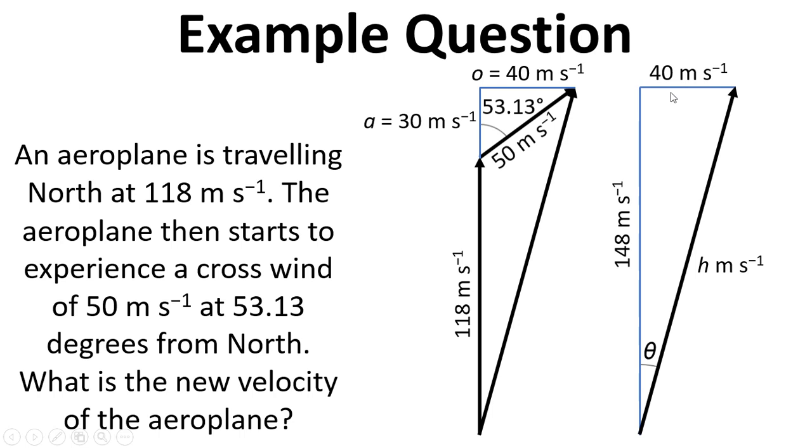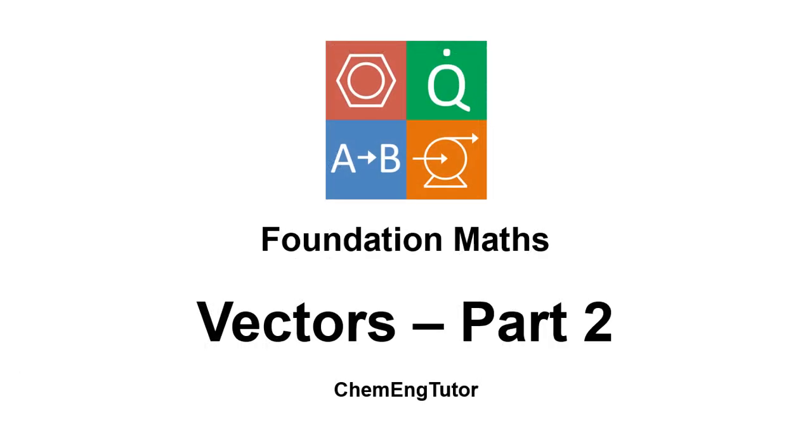If we put all of this together into a new triangle, the total velocity going north is 148 metres per second. So that's the 118 plus the 30. And the total east is 40 metres per second. So then using Pythagoras, we can work out H. And using trigonometry, we can work out the angle. And in this case, they work out to be 15.1 degrees and 153 metres per second. So that's been a brief video to introduce some further concepts in vectors.